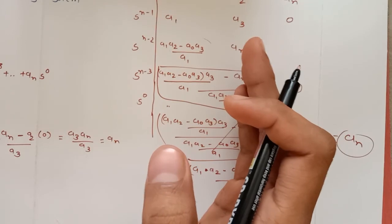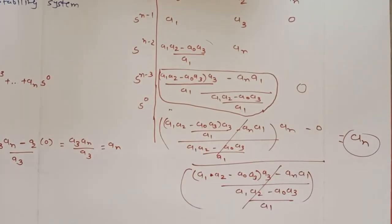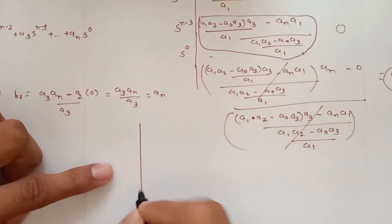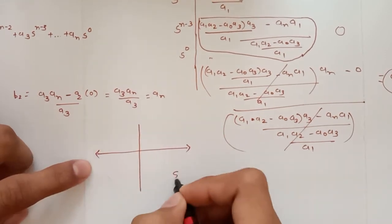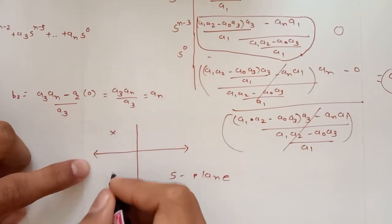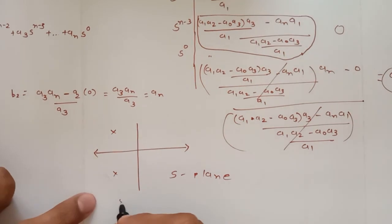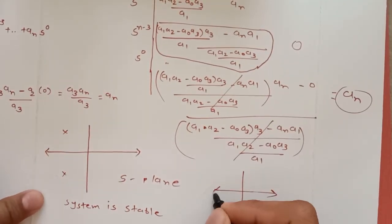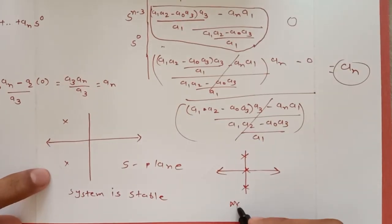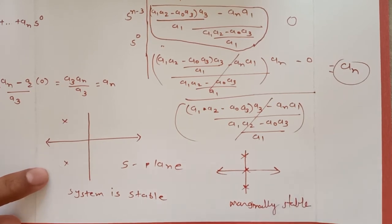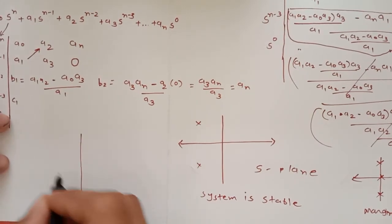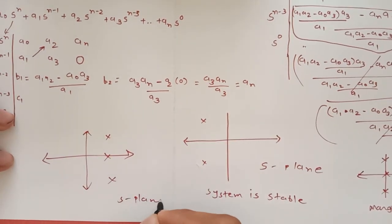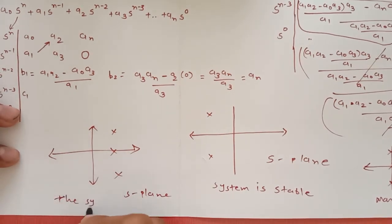Before the example, note that the Routh Stability Criteria indicates a system is stable if all its roots are in the left half of the s-plane. If roots lie on the jω axis, the system is marginally stable. If roots are in the right half of the s-plane, the system is unstable.